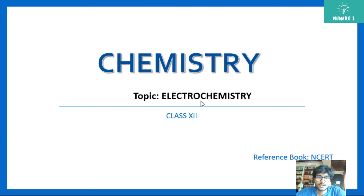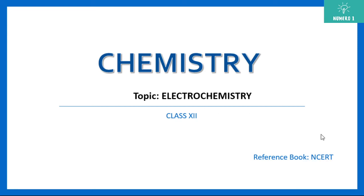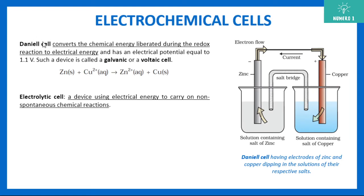Welcome to the first session of electrochemistry. In this session we are talking about Daniell's cell, and we will see how applying an external voltage affects it. A Daniell's cell consists of a zinc rod and a copper rod, both dipped inside solutions — one side contains a salt of zinc with the zinc electrode, and the other side contains a salt of copper.